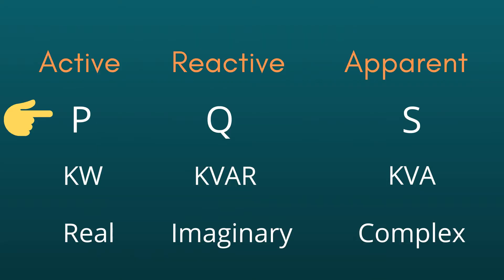Active power is denoted by capital P. Reactive power is denoted by capital Q. And apparent power is denoted by capital S. The unit for active power is kW, the unit for reactive power is kVAR, and the unit for apparent power is kVA.